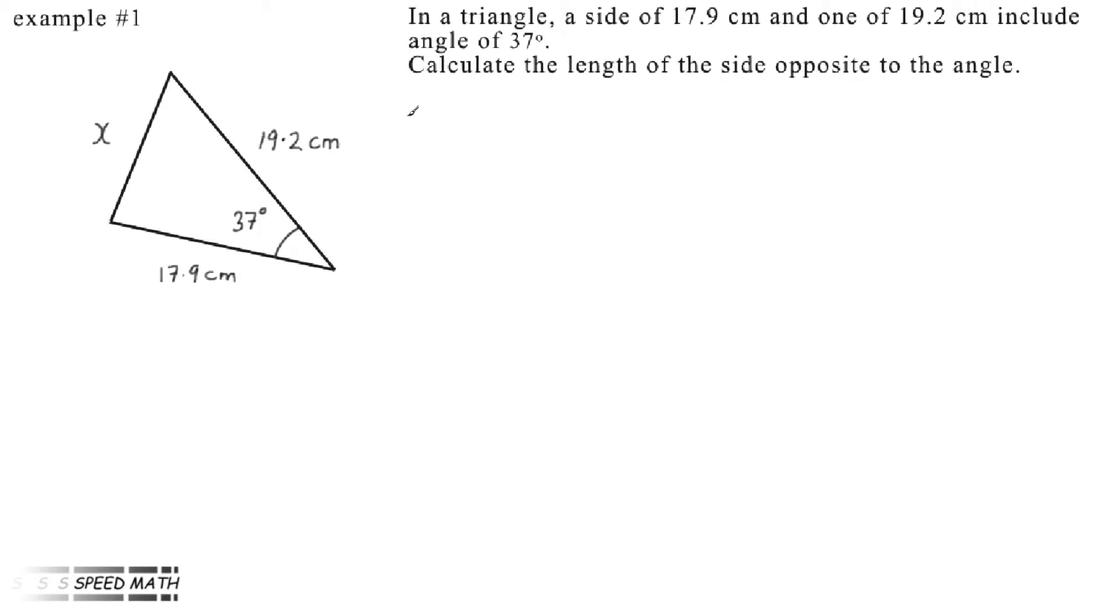Well, first we state that we're using the cosine rule. So we write, using the cosine rule, and we state the equation: a² equals b² plus c² minus 2bc cos(A).